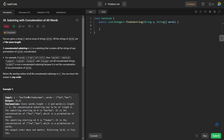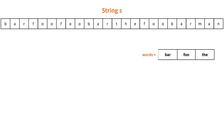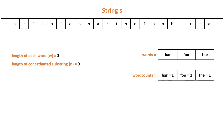Let's understand this problem with animation. We are given two things: a string s and an array of strings words. First, get the length of each word and the total length of the substring after concatenation. In this case, the length of each word, denoted by w, is 3, and the length of the concatenated substring is 9, denoted by n. Now create a map to store the occurrence of each word in the array. In this case, all the words occur only once.